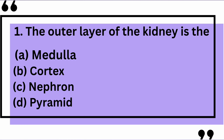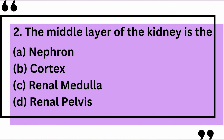The outer layer of the kidney is the — yes, the correct answer is B: cortex. The middle layer of the kidney is the — yes, the correct answer is C: renal medulla.